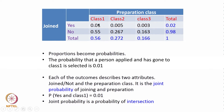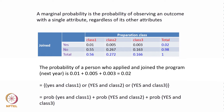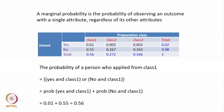Joint probability is the probability of intersection. Marginal probability is the probability of observing an outcome with a single attribute regardless of other attributes. The probability of a person joining the program is 0.01 plus 0.005 plus 0.003, which approximates to 0.02 — the sum of P(joining and class 1) plus P(joining and class 2) plus P(joining and class 3).